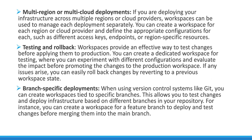The next use case is branch-specific deployment. When using a version control system like Git, you can create a workspace tied to a specific branch. For example, create a workspace called 'dev' tied to a feature branch. Once you test all your changes, you can merge that feature branch — along with your Terraform configuration — into the master or main branch.